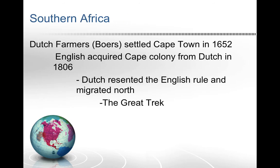To discuss Southern Africa, some background is needed. Dutch farmers called the Boers had been living in Southern Africa. The Boers are from the Netherlands and settled in Cape Town, South Africa in 1652, living peacefully as farmers. However, in 1806 the English acquired Cape Colony from the Dutch, and the Boers felt overwhelmed and resented the English for coming in and taking over everything.